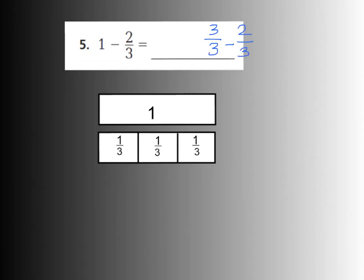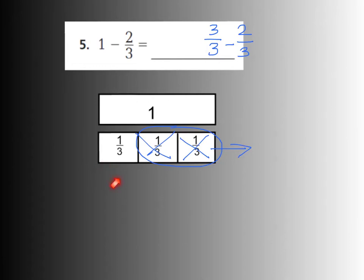Now I'm going to take away two-thirds. One way I can do that is circle the two-thirds, cross them out, and maybe show an arrow to show that I'm removing them. As you can see, what's left over is one-third right there. So the answer is three-thirds minus two-thirds equals one-third.